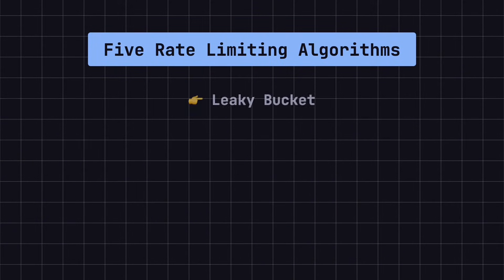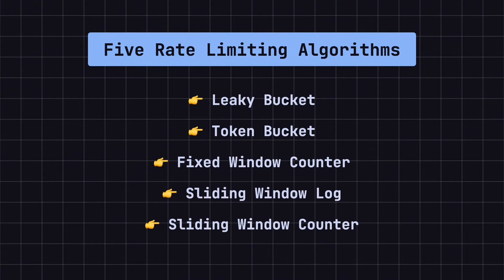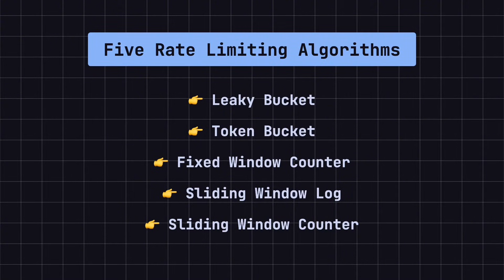Today, we will explore five common rate limiting algorithms: the leaky bucket algorithm, the token bucket algorithm, the fixed window counter algorithm, the sliding window log algorithm, and the sliding window counter algorithm. By learning these algorithms, you'll gain insights into how to choose the right rate limiting strategy based on your system's needs, enabling efficient traffic management.